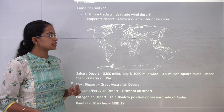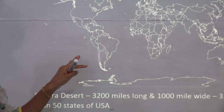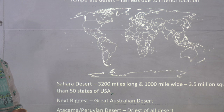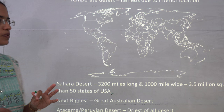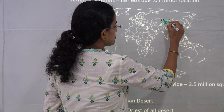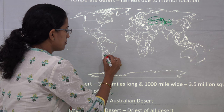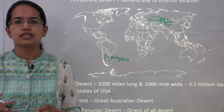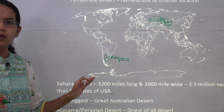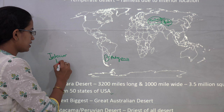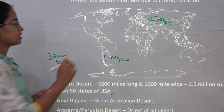Let us first focus on the various desert regions of the world. We have the world map here and we will try to highlight the major deserts — the hot deserts and the mid-latitudinal deserts. There are three major mid-latitudinal deserts: the Gobi desert, the Turkestan desert, and the Patagonian desert. These three mid-latitude deserts are known because of their interior location — the dryness is mainly due to the interior location.